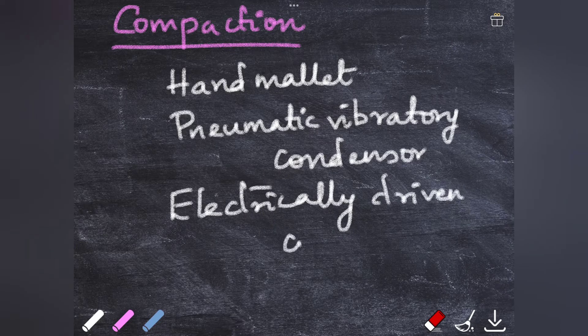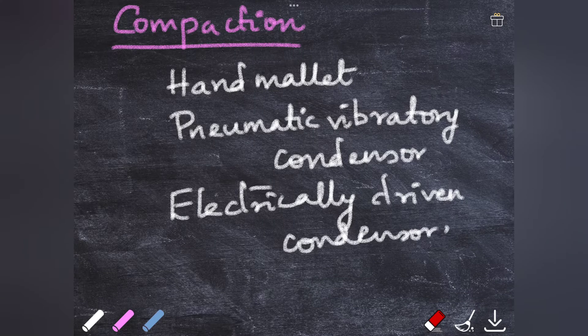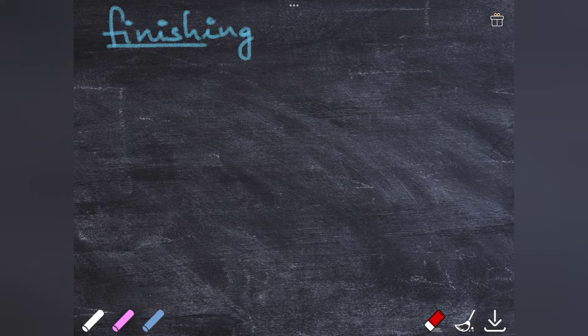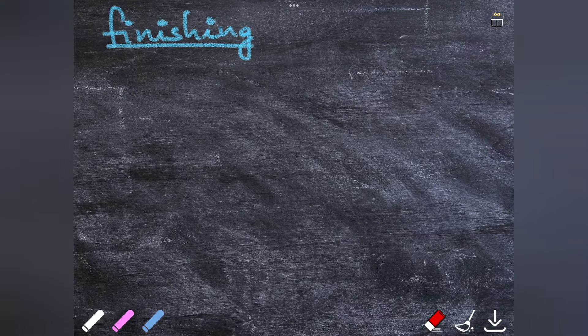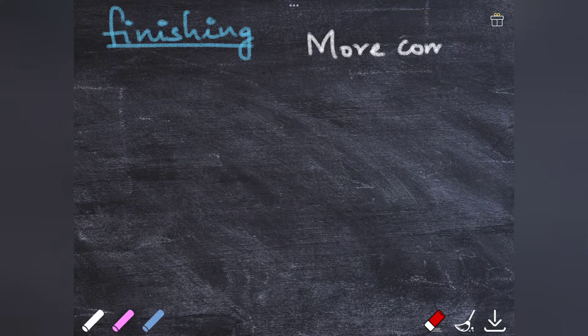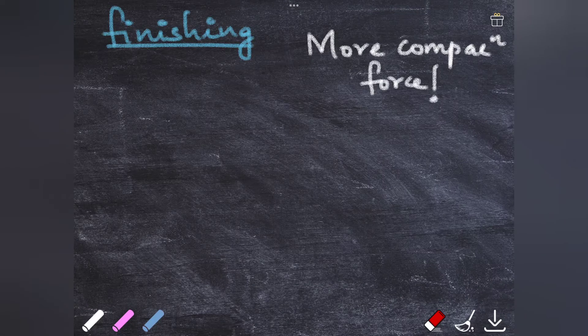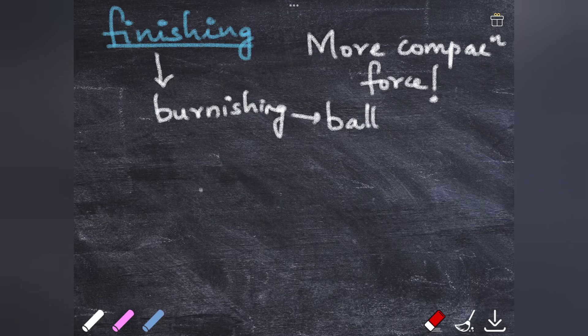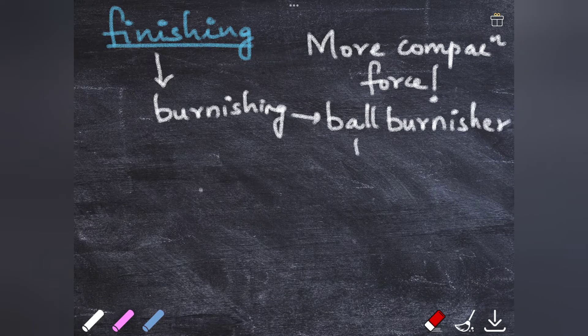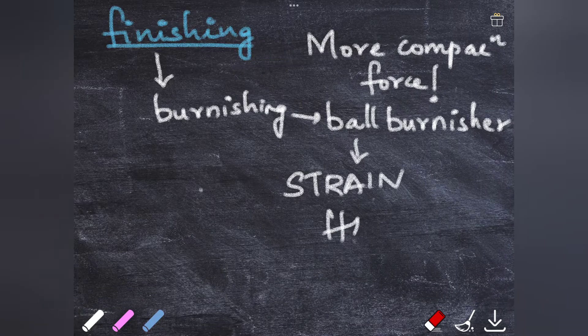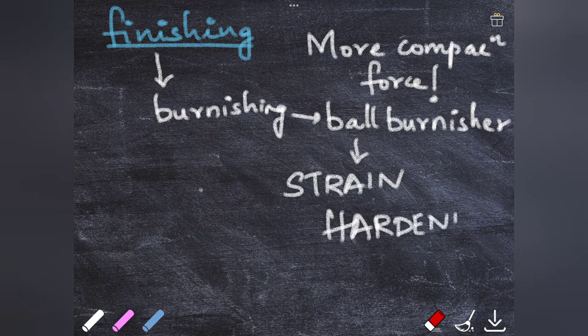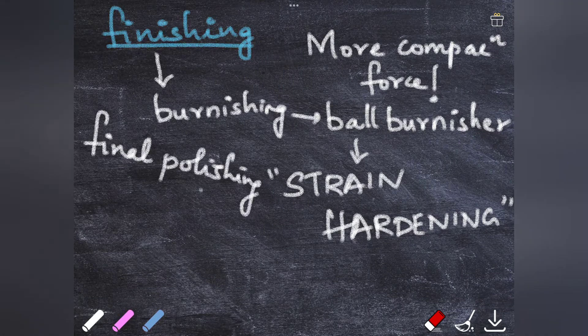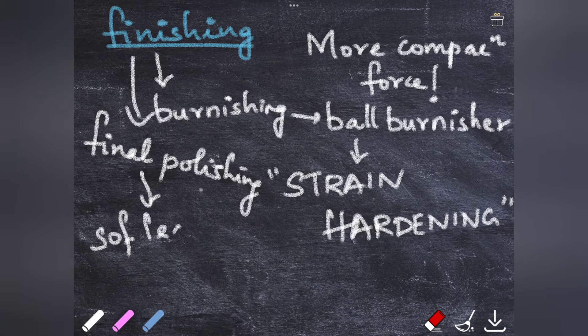Now the last process for the direct filling gold restoration is finishing. Like with amalgam, you have to slightly overfill the cavity here. If the probe penetrates the restoration easily, give more compaction force to it. The surface is burnished by using a ball burnisher to give more strain hardening. If you want to know what strain hardening is, please go back to my video on the physical properties. Then the final polishing of the restoration is done by using either a soft flex disc.